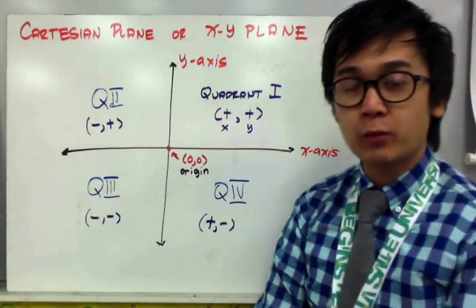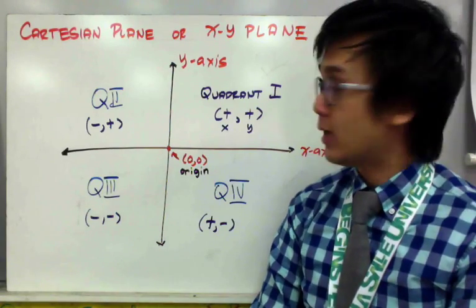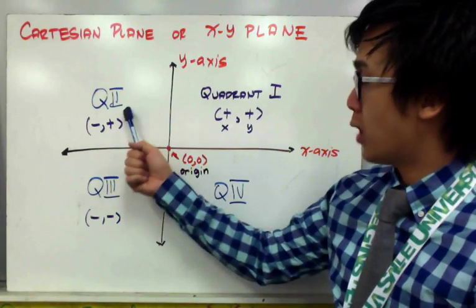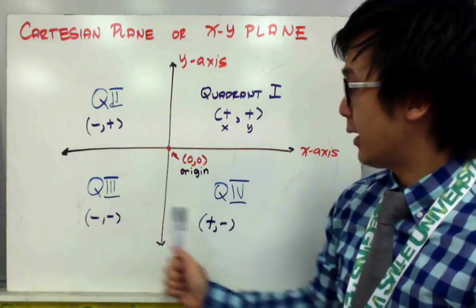In our Cartesian plane, which is also known as the x-y plane, we are separating it into quadrants. So we have quadrant 1, quadrant 2, quadrant 3, and quadrant 4.